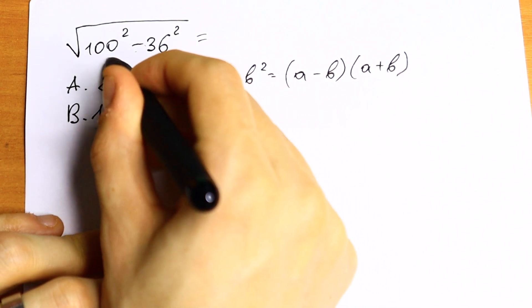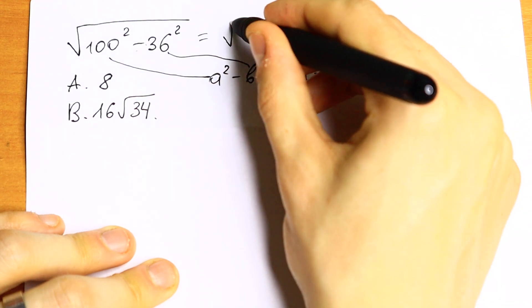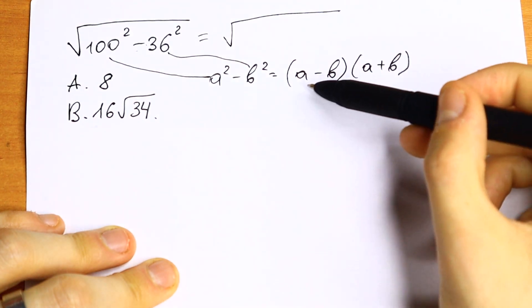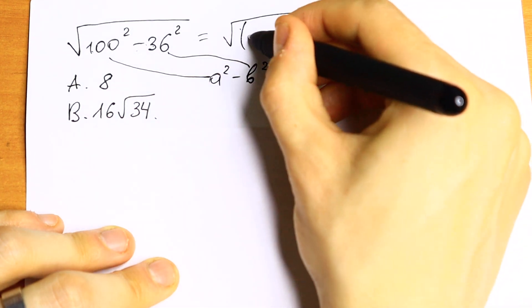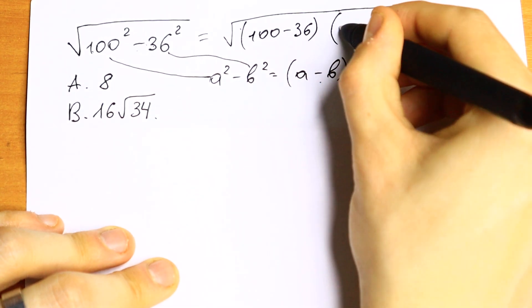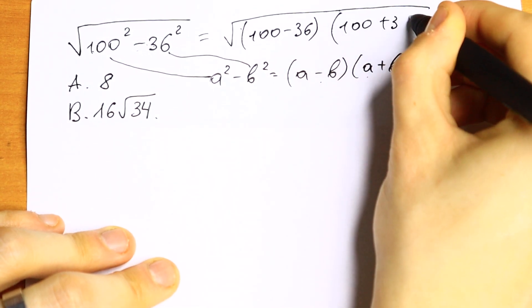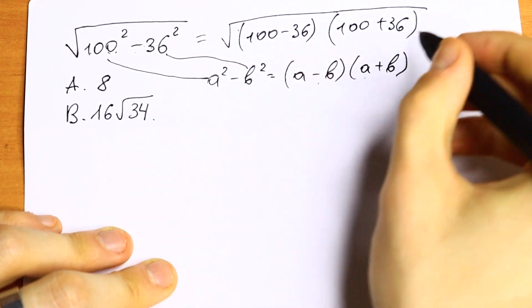So we have this is our a, this is our b, and we can use this formula. What we will have? In parentheses we will have difference and the sum. So difference 100 minus 36, and the sum 100 plus 36. So we can rewrite this using this formula.